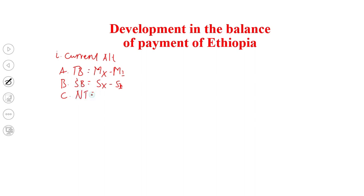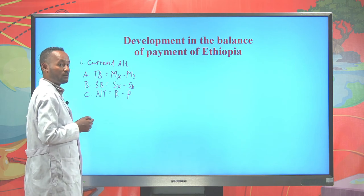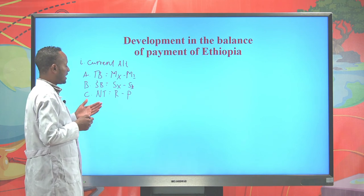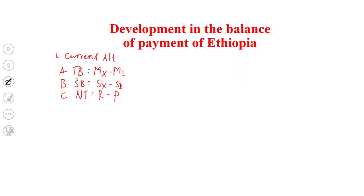Net transfer is the difference between remittance and gifts received minus remittance and gifts paid. If remittance and gifts received is greater than paid, net transfer is positive; if paid exceeds received, net transfer is negative; if equal, net transfer is zero. The current account balance is the sum of trade balance, service balance, and net transfer.